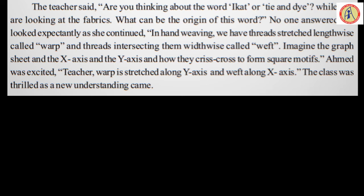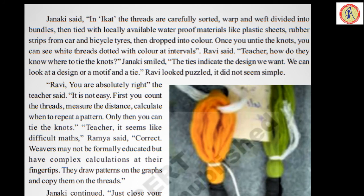Janaki said: In ikat, the threads are carefully sorted — warp and weft — divided into bundles, then tied with locally available waterproof material like plastic sheet or rubber strip from car and bicycle tires, then dropped into color. Once you untie the knot you can see white threads dotted with color at intervals. Ravi said: Teacher, how do they know where to tie the knot? Janaki smiled. The tie indicates the design we want. We can look at a design or a motif and tie. Ravi looked puzzled — it did not seem simple. Actually these weavers in olden days were not well educated, but from their ancestors and grandparents they learnt how to do these designs.